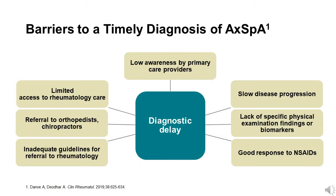The true prevalence of axial spondyloarthritis is unknown, and large differences between diagnostic prevalence and population prevalence have been reported, which may reflect substantial underdiagnosis in routine clinical practice. The average delay between symptom onset and diagnosis is estimated to be five to seven years, with evidence that the delay can be significantly longer in women than in men.